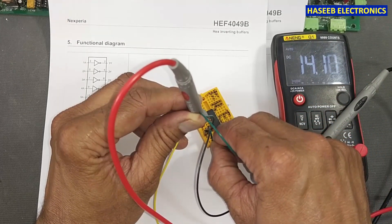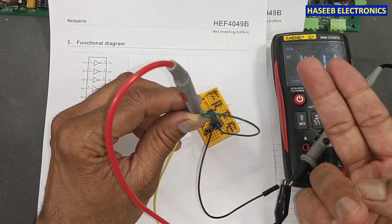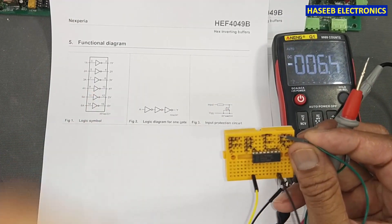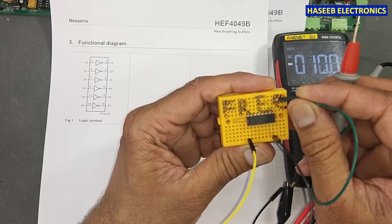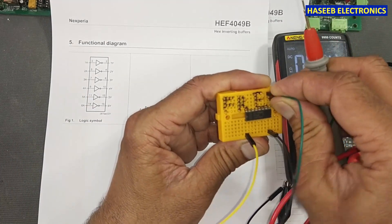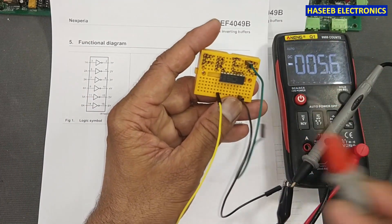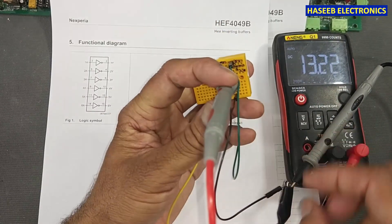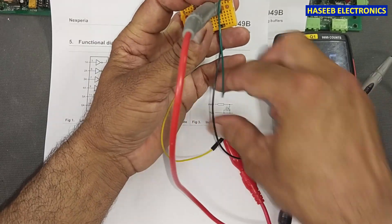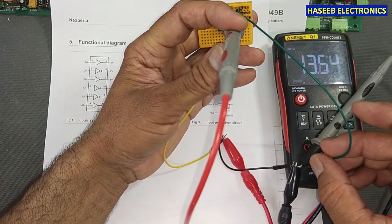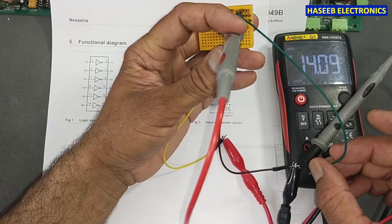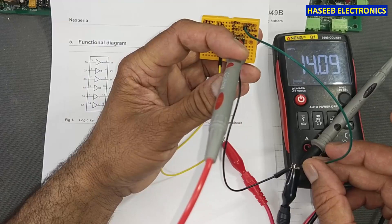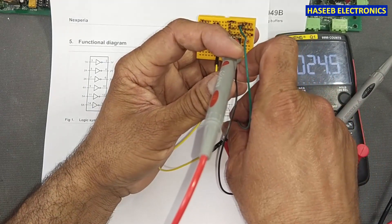Now pin 9 is input, pin 10 is output. This is pin 9 input and pin 10. We will connect to ground. The output is high. We will connect to positive, the output is low. Input low, output high. Input high, output low.